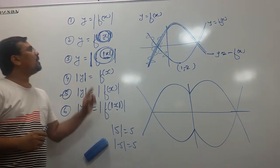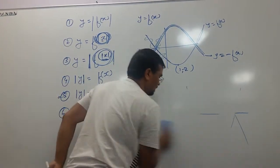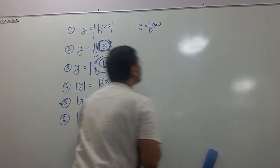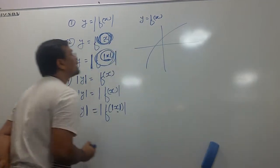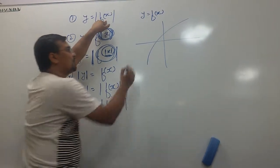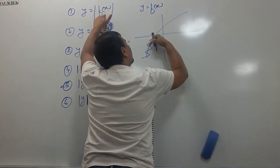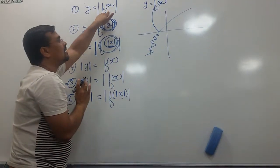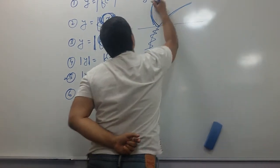Let's do one more example of each graph very fast. If a function y equal to f(x) looks like this, how does number 1 look? My y should always be positive, so for the negative part I will convert it to positive — it would be a reflection. This part reflects across the x-axis. This is how number 1 graph would look.